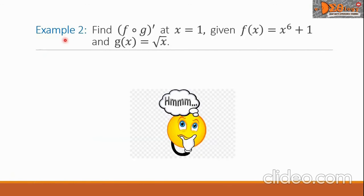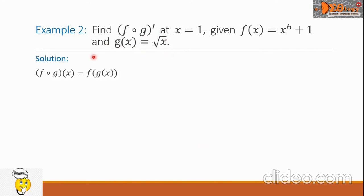Example 2: Find f composite g prime at x equals 1, given f of x equals x raised to 6 plus 1, and g of x equals square root of x. For our solution, let us first show that f composite g of x equals f of g of x.